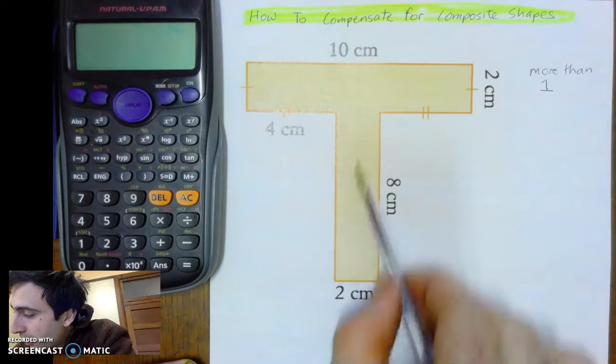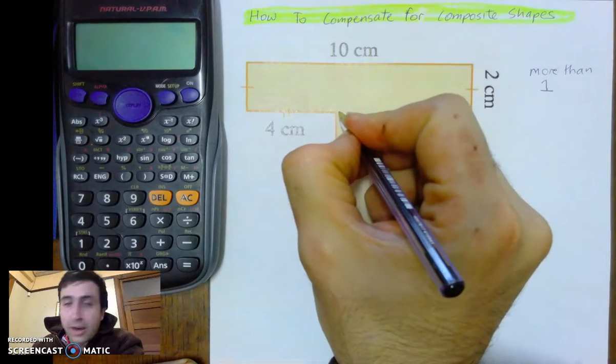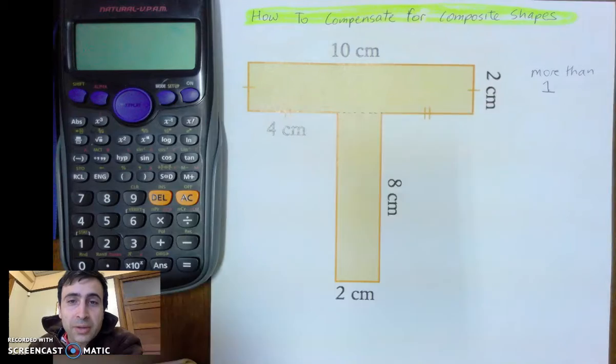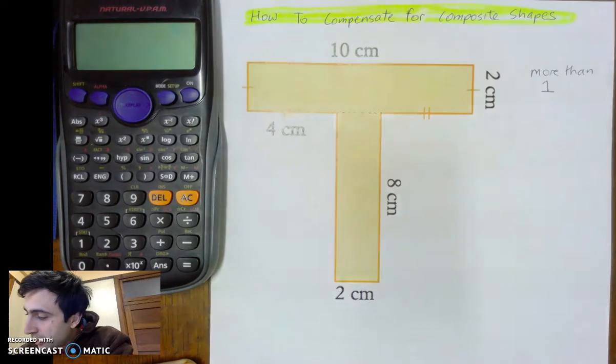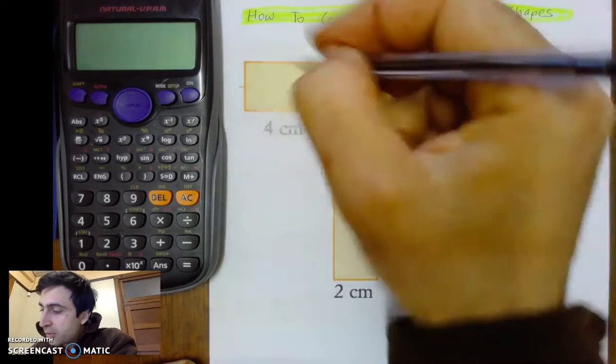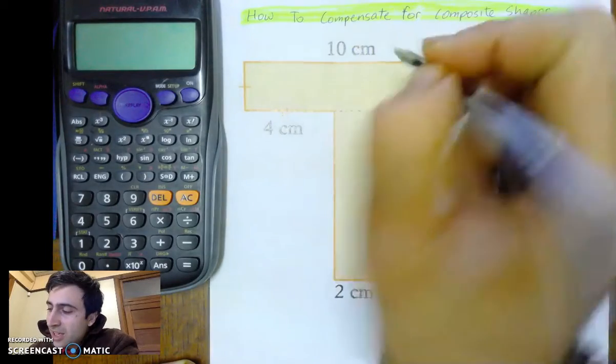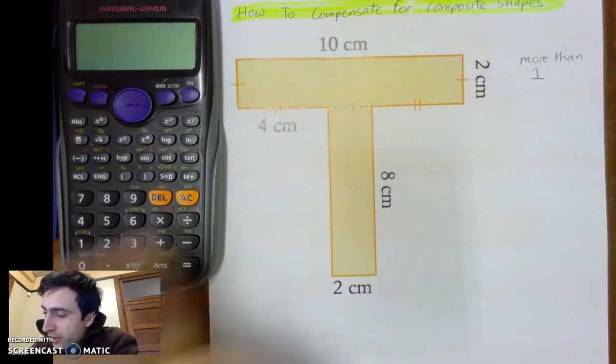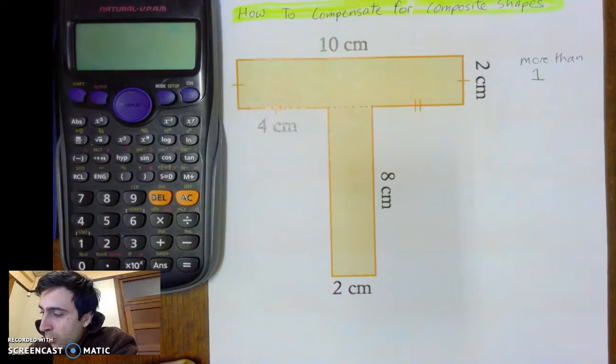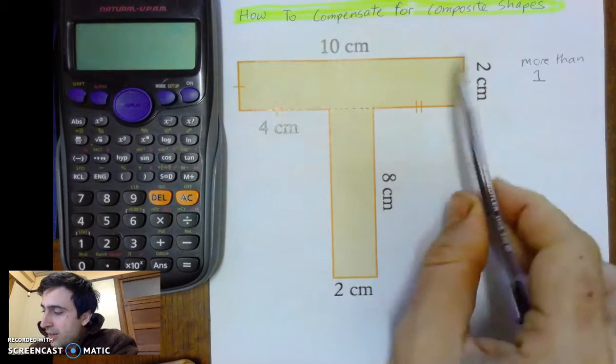So here we can cut it a bunch of different ways. I could have also cut it lengthways like that. But this for me is the easiest way. We see that this T is actually, if I cut it across there, one big rectangle and another big rectangle.